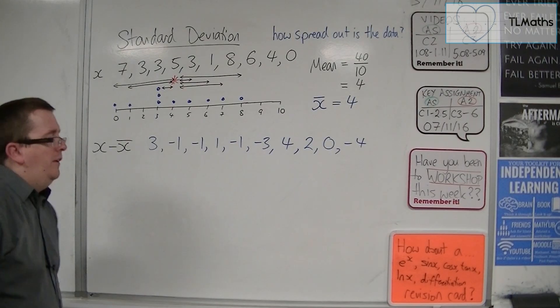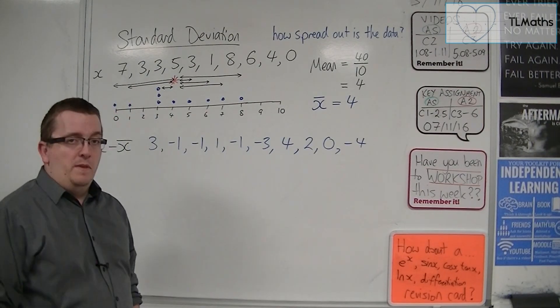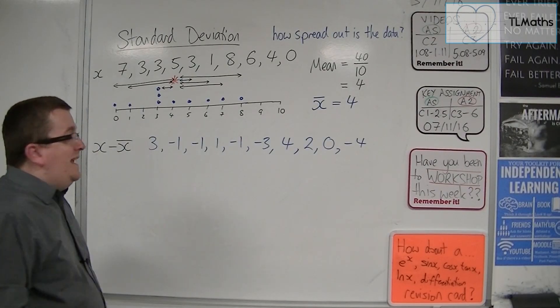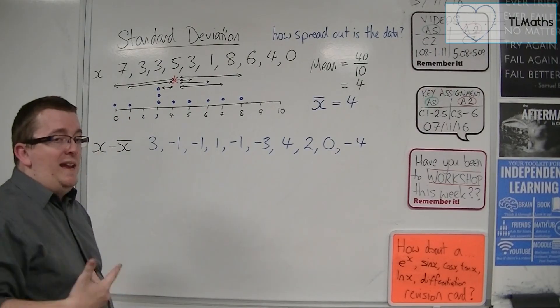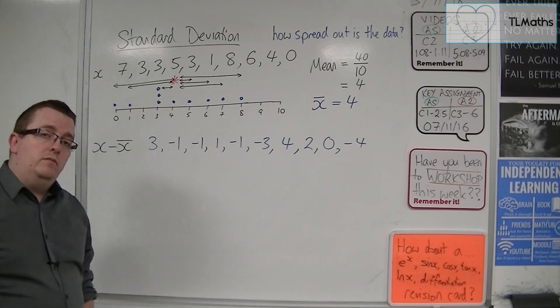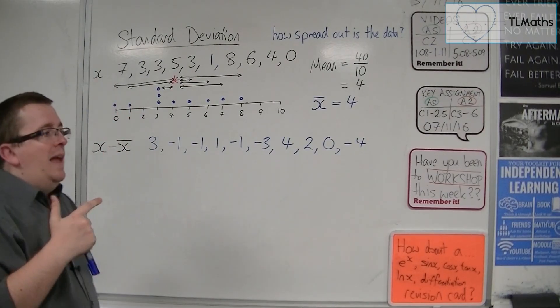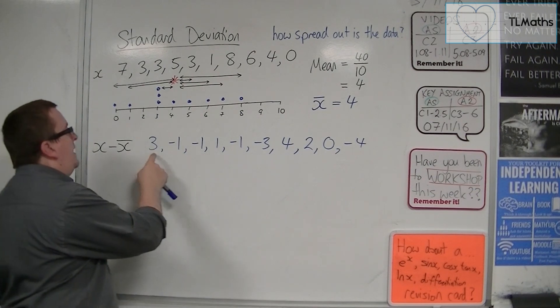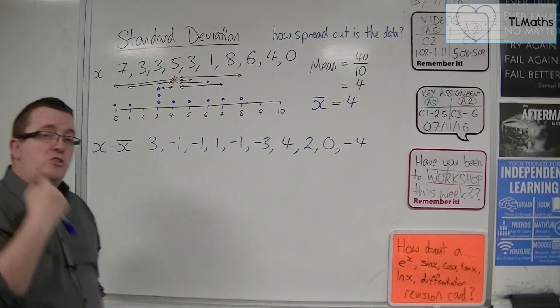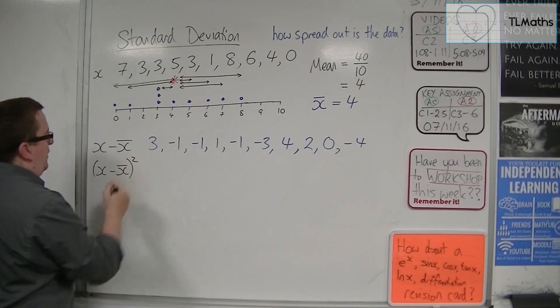Well, that doesn't really tell me anything, does it? Because what I'd be saying then is that on average, these numbers are 0 away from the mean. Which clearly isn't the case. So, and it isn't like by just by accident that all of these have added up to 0. They would with any numbers that I'd started with. I would have had exactly the same problem. So, how do I get around this adding them all up and finding them all add up to 0? Well, I need to make each of these positive somehow. And the way to make each value positive, one way of doing it, is to square each of them.